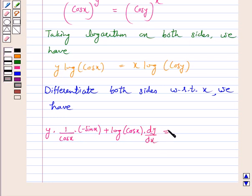On the right hand side, applying the product rule: x · (1/cos y) · (-sin y) · dy/dx + log(cos y) · 1.